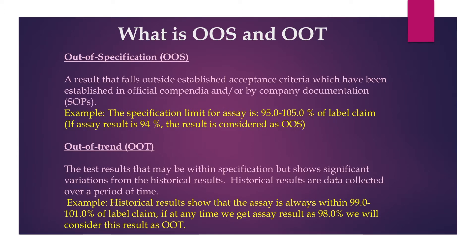What is out of trend? OOT refers to test results that may be within specification but show significant variation from historical data or historical results. Historical results are data collected over a period of time. For example, if historical results show that SE is always within 99 to 101 percent of label claim, and we get an SE result of 98 percent, we would consider this result as OOT — out of trend.